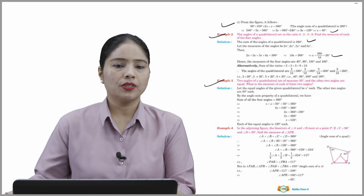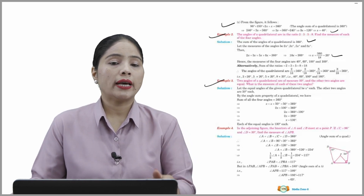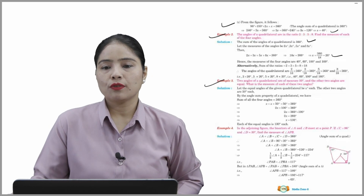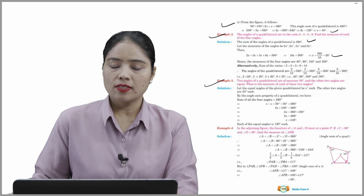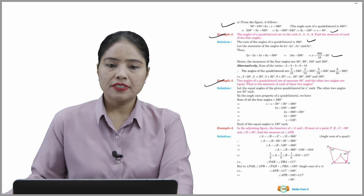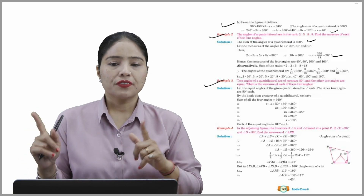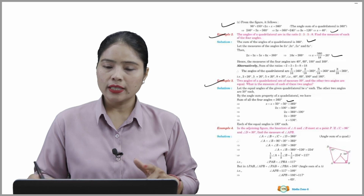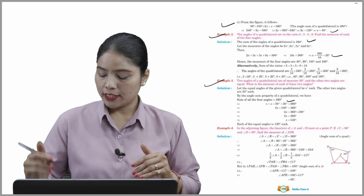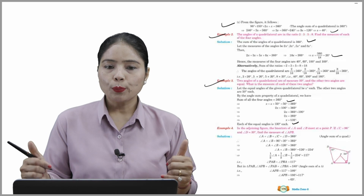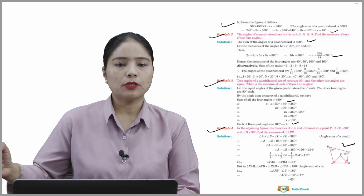Example 3: two angles of a quadrilateral are of measure 50° each, and the other two angles are equal. What is the measure of each of these two equal angles? Solution: let each equal angle be x°. By the angle sum property, 50° + 50° + x + x = 360°, which gives 2x = 260°, so x = 130°. Each of the equal angles is 130°.